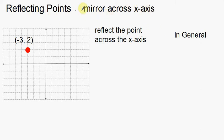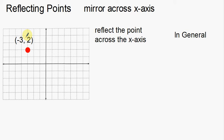One thing about a mirror is that if I'm reflecting across the x-axis — right here is my x-axis — this point is going to reflect across this x-axis. One thing we know is that when points get reflected across the axis, the two resulting points, the original and the new one, are going to be the same distance from your line of reflection. We're going to use that fact to help us reflect this point across.